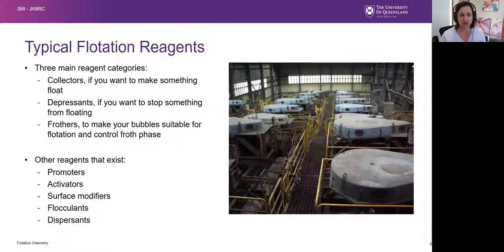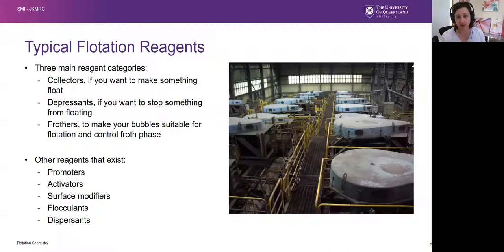All of this can be achieved through a carefully calibrated suite of reagents added into your flotation system. Flotation reagents fall into three major categories: collectors, if you want to make something float or stick to your bubble; depressants, if you want to stop something from floating; and frothers, which condition your bubbles to make them suitable for flotation and control the froth phase that recovers out of your cell. There are plenty of other reagents too — promoters, activators, surface modifiers, flocculants — but those are the main ones.